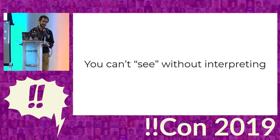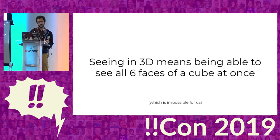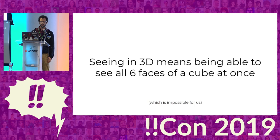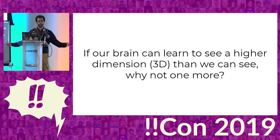All this is to say that you can't see anything without doing some sort of interpretation. You can't actually see 3D with your eyes — it's your brain that puts together the three-dimensional image. If you could actually see in 3D, you'd be able to see all six faces of a cube at once, which you can't. Contrast that with how you can actually see all four sides of a square or any two-dimensional shape at once. So if your brain can learn to put together a higher dimensional shape from lower dimensional images, why can't we do it for one more dimension up?